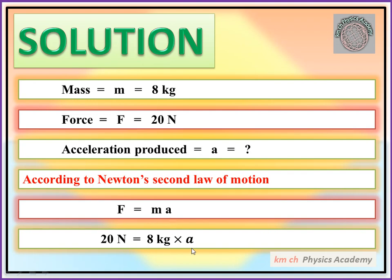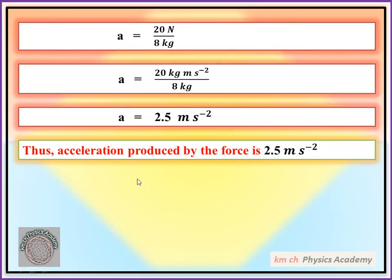A equals 20 Newton over 8 kg. Newton is kilogram meter per second square, so this becomes kilogram meter per second square over kilogram.